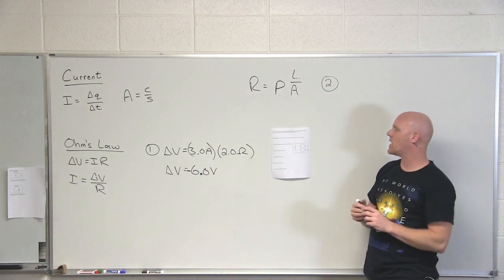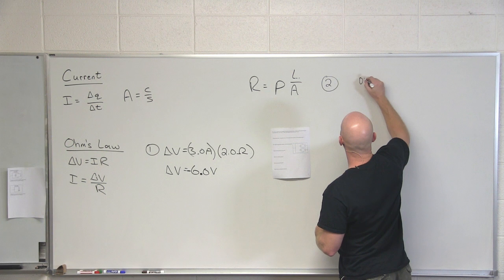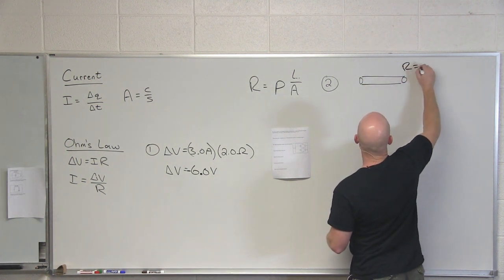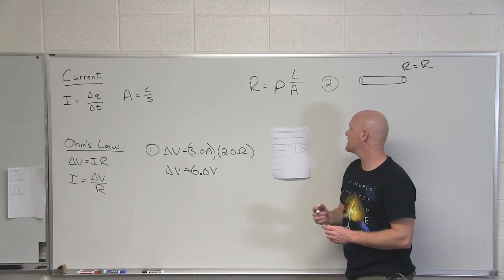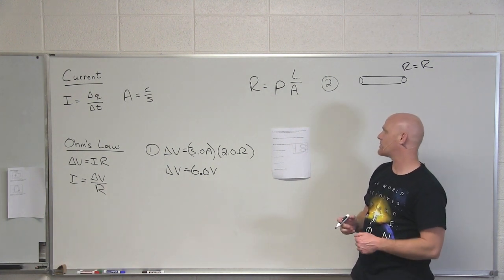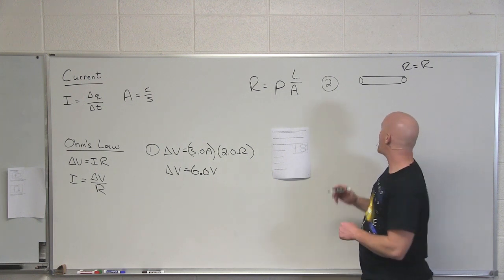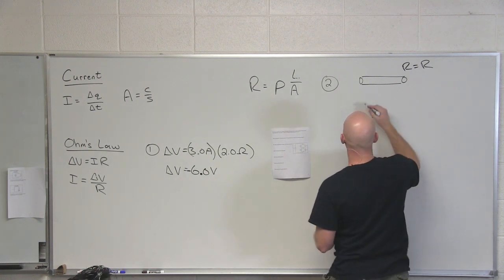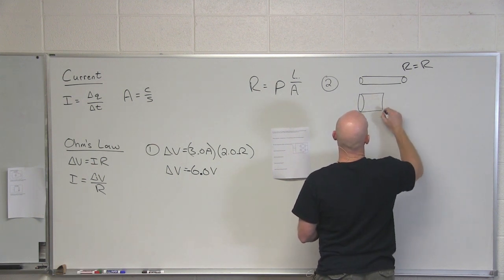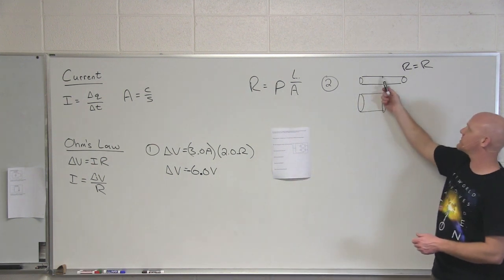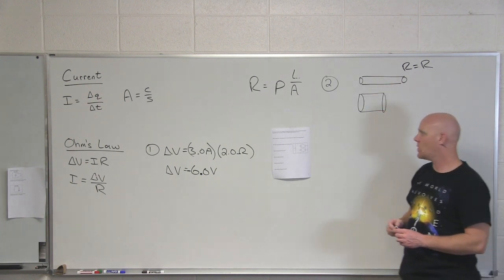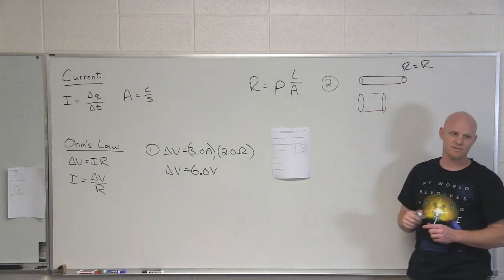Question number two says, a piece of copper wire of resistance r. So here I've got a piece of copper wire, and its resistance is simply equal to r. Cool. We're going to replace this piece of copper wire with a new piece of copper wire, so it's still copper, that is half as long and has a radius that is three times larger. So it's only half as long as the original wire, but the diameter is now three times bigger. And the question is, what would be the resistance in this wire?